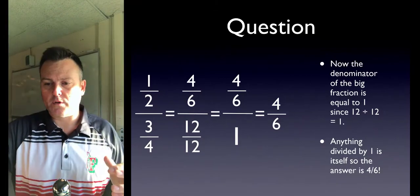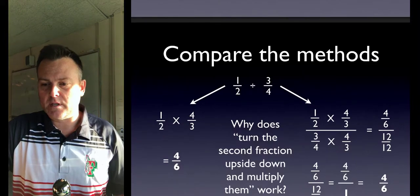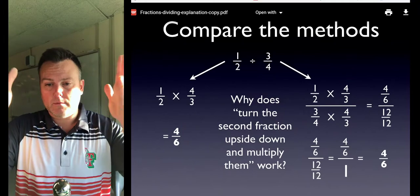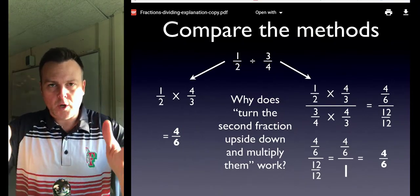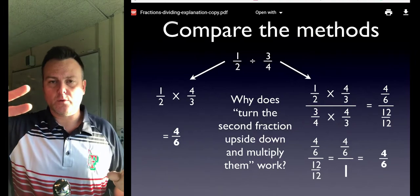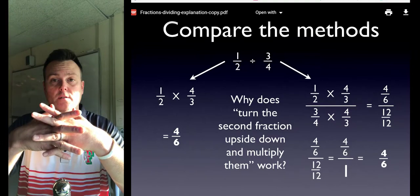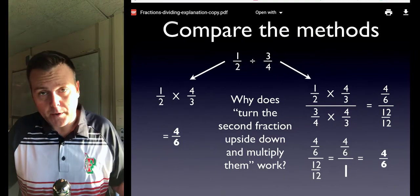As you can see on the last slide, look at the two methods and just see that you now know why we have to flip that second fraction when we divide fractions. We're just canceling out the denominator—that's it.